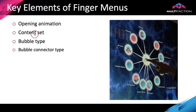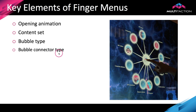The content set determines what sits behind the menu. The bubble type determines what these bubbles within the menu system look like. The connector type are the arms that link the bubbles together.